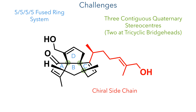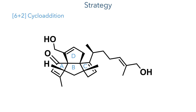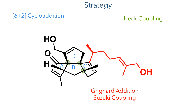Appended to this ring system, there is also a chiral sidechain which must be constructed stereoselectively. The strategy to construct this molecule involves a 6+2 cycloaddition that would lay the foundation for the polycyclic structure, while a Heck coupling could introduce the final ring. A Grignard reaction could be used to install the chiral sidechain, which could be further elaborated using a Suzuki coupling.